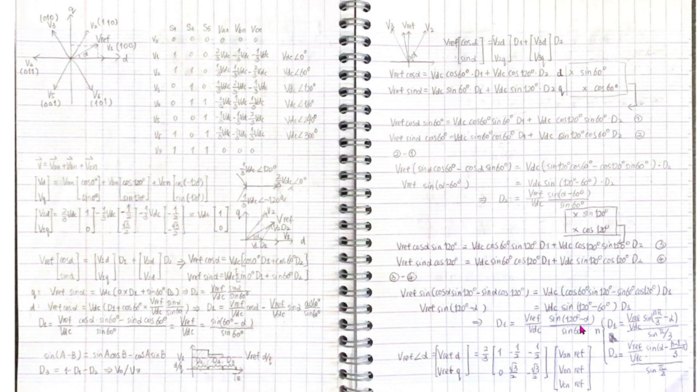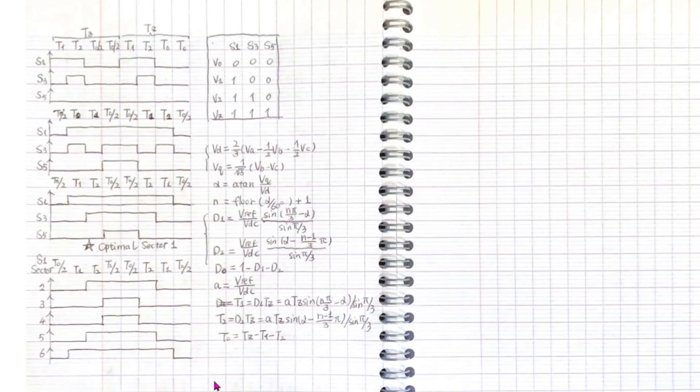Thus we get a relationship between sector number N and the duty. And the reference vector can be calculated from ABC phase voltage by ABC to DQ matrix. Now let's see how exactly the switches are on-off.